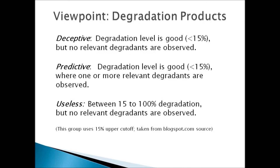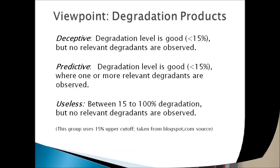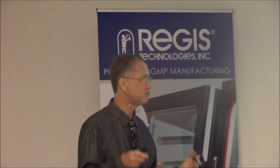This is taken from an online source — it's a little funny how they say things — but it describes degradation products and how you might find them if you degrade too much, too little, or just right. What I like is the middle one, 'predictive,' which is when your degradation level is good and one or more relevant degradation products are observed. 'Useless' is when you over-degrade, or when you apply a lot of treatment and you're not actually seeing anything form.